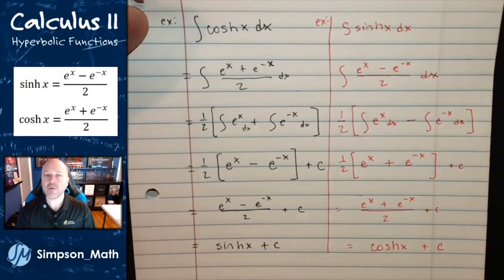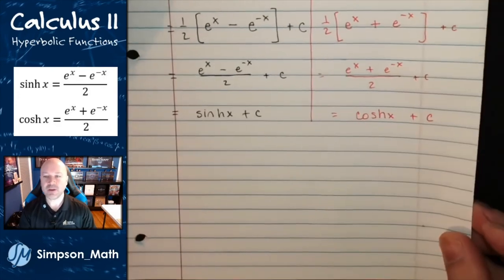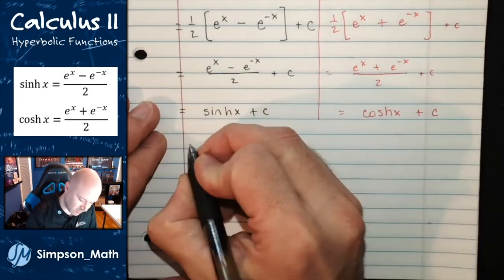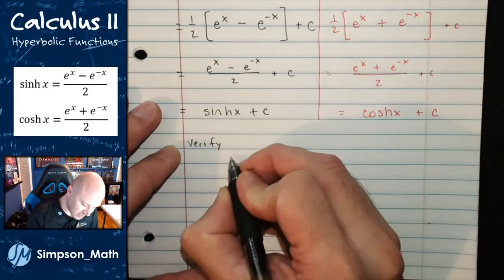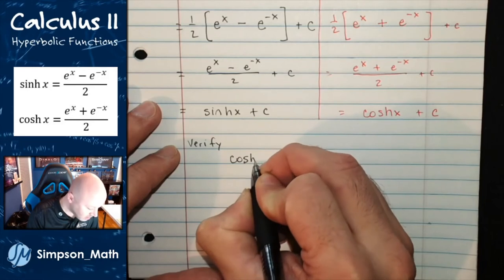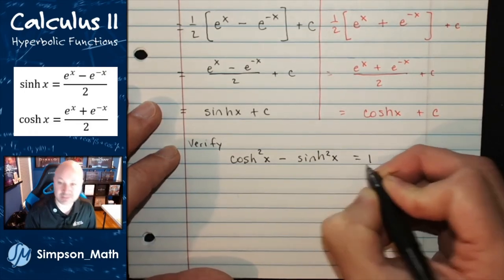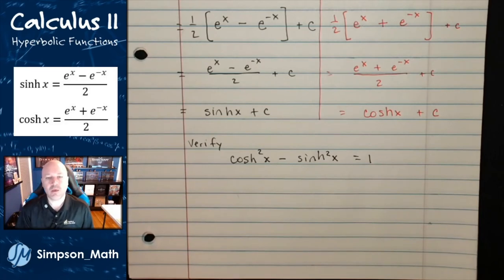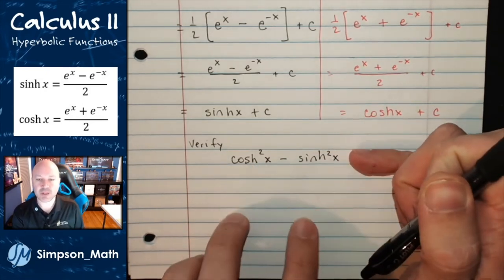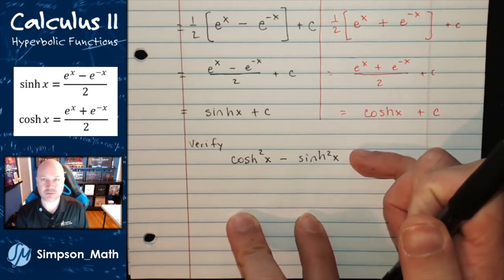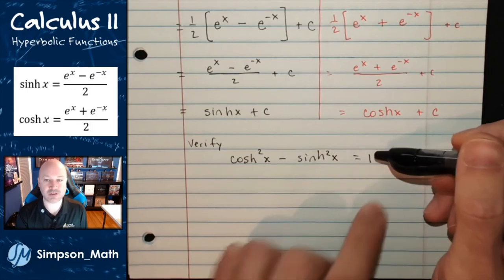This hyperbolic stuff reminds me a lot of trig, so let's do some old verifications. I'd like to verify some hyperbolic identities. Let's try this one: verify that cosh²(x) minus sinh²(x) equals 1. This is old-school verification where you pick one side of the equation to manipulate, justify each step with an identity or algebra, until that side looks exactly like the other. You only manipulate one side.